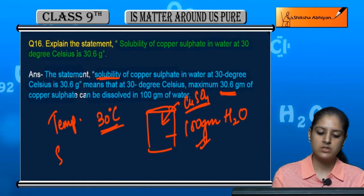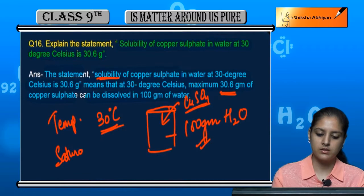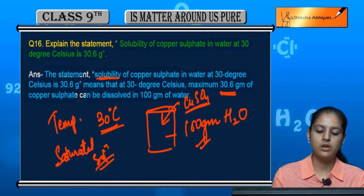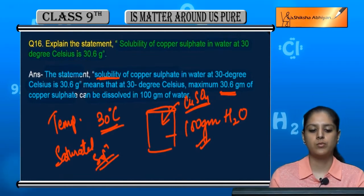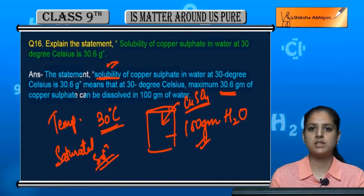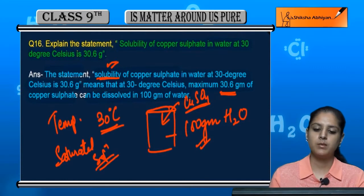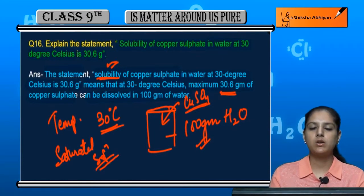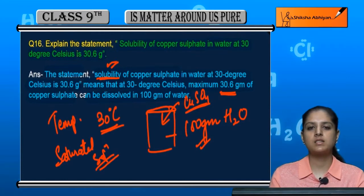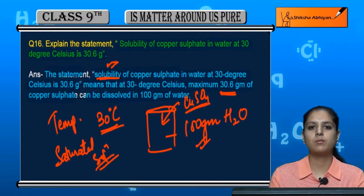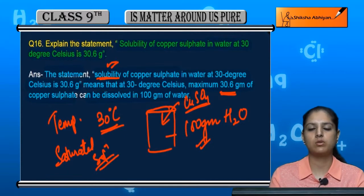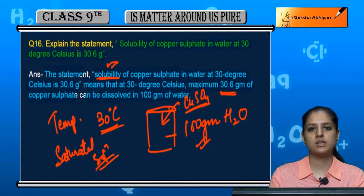This means it becomes a saturated solution. It is not possible to dissolve more copper sulfate in this water, because the solubility is limited to 30.6 grams at that temperature. So at a particular temperature, the solubility value indicates the maximum grams of solute that can dissolve in 100 grams of water.